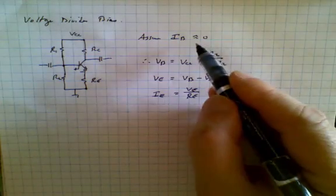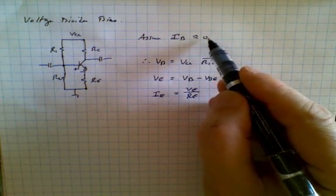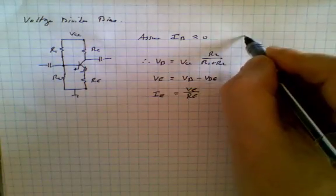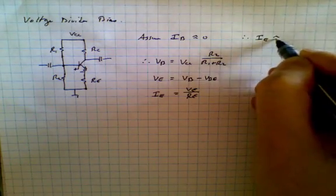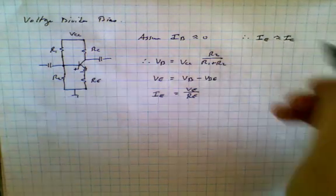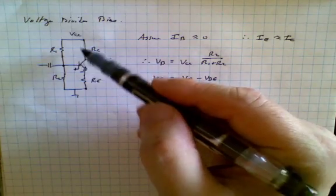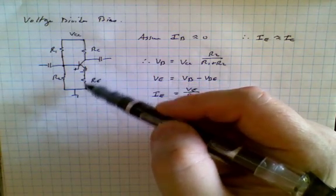And because we made this assumption, IB is equal to zero, we can say as a consequence of that, IE is approximately equal to IC. So that means that the collector current in here is really the same as the emitter current over here.